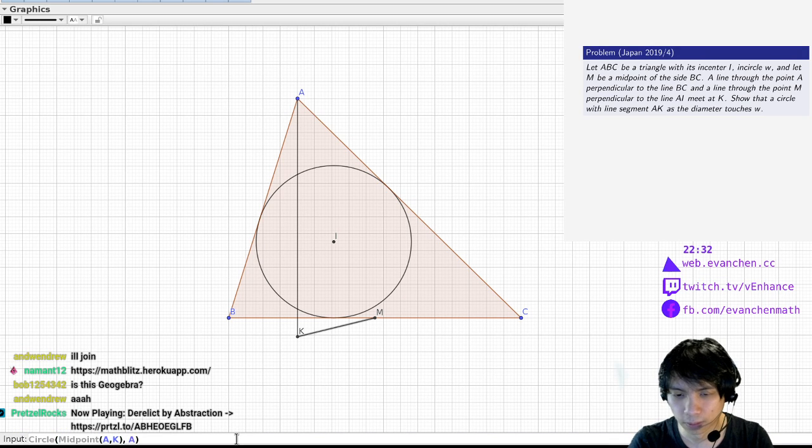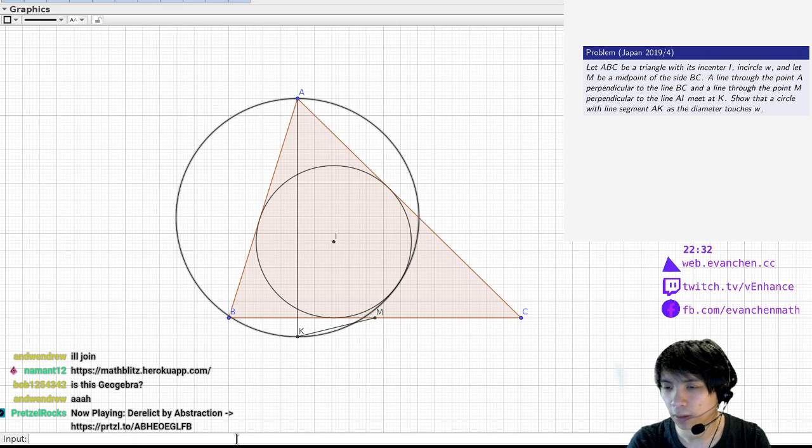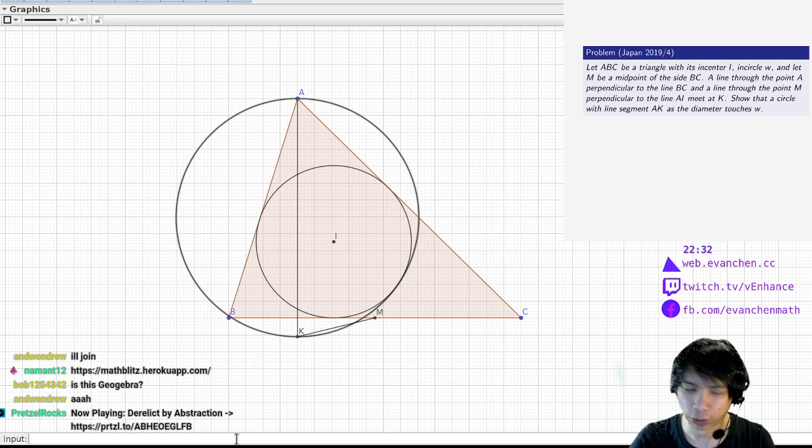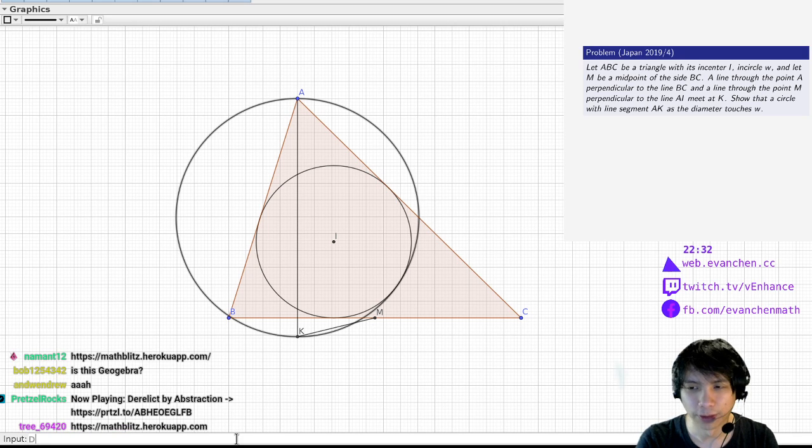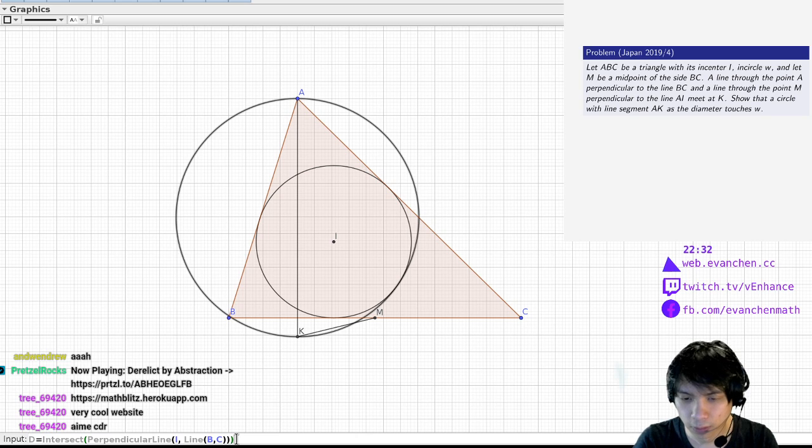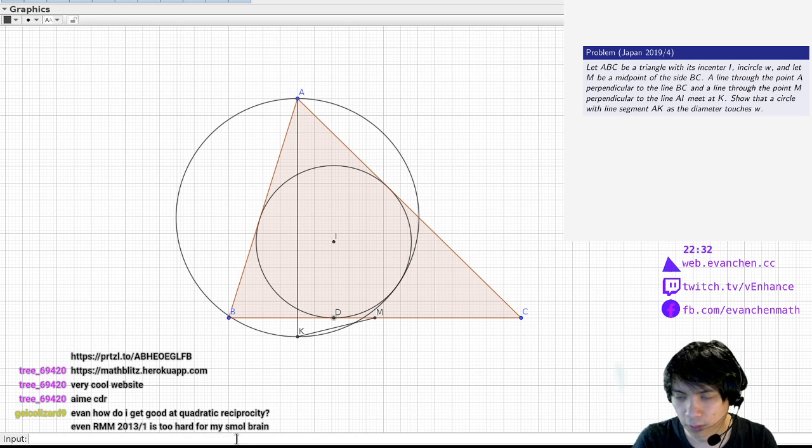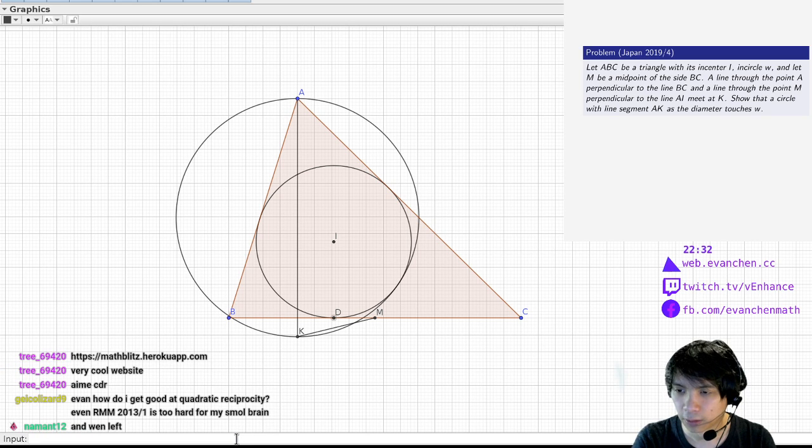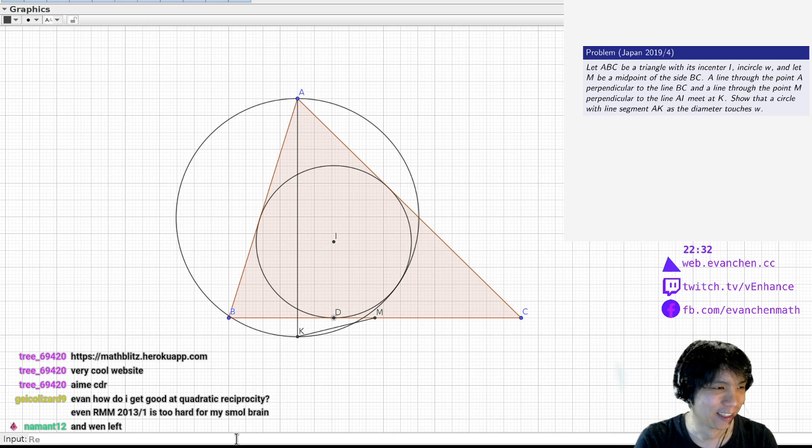Okay, so that's the picture. Here's what I'm going to do. D is going to be the foot from I to BC. And then I bet I know what that point is - reflect D across line AM.